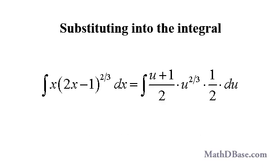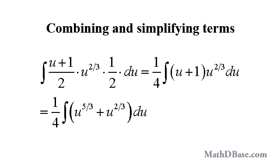Now substituting all of this into the original integral, x will be replaced by the quantity u plus 1 over 2. The quantity 2x minus 1 to the two-thirds will be replaced by u to the two-thirds, and dx will be replaced by half times du. Combining the terms and distributing the u to the two-thirds term we get, which we can integrate by the sum and power rules.